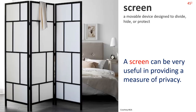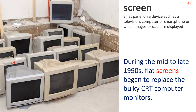Screen — Definition 1: a movable device designed to divide, hide or protect. A screen can be very useful in providing a measure of privacy. Definition 2: a flat panel on a device such as a television, computer or smartphone on which images or data are displayed. During the mid-to-late 1990s, flat screens began to replace the bulky CRT computer monitors.